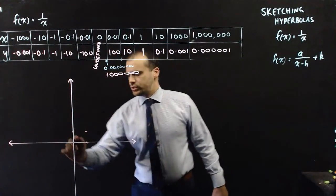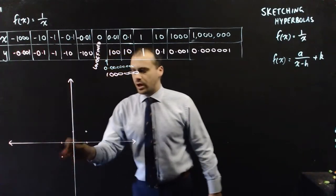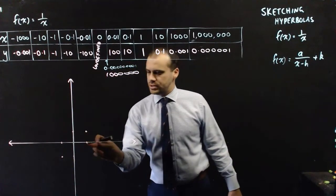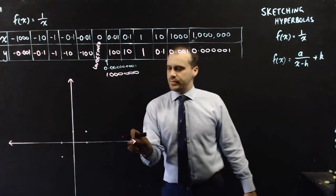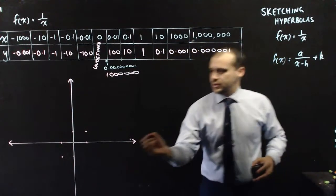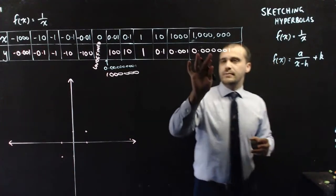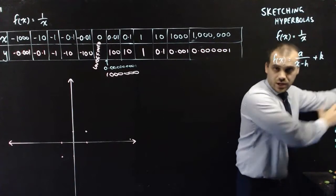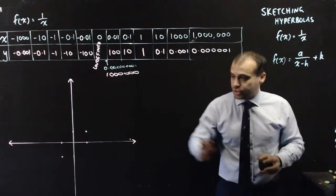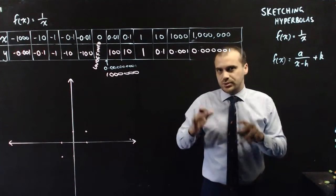And then a mirror image on this side — a special point at (-1, -1). So I've got these two points and I know my equation is going to pass through those. When x is 10, the value will be about 0.1. When x is 1,000, the value of y is going to be very close to the x-axis but not quite touching. This special behavior is called an asymptote.